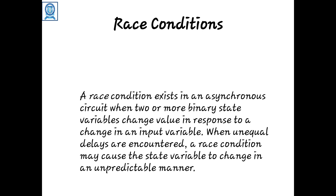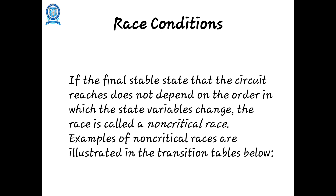Consider two binary state variables: the first state variable is 00 and the second is 01. Comparing the first bits — zero equals zero, no change. Comparing the second bits — the first state has zero and the second state has one, so it changes. Thus between 00 and 01 the number of changes is one.